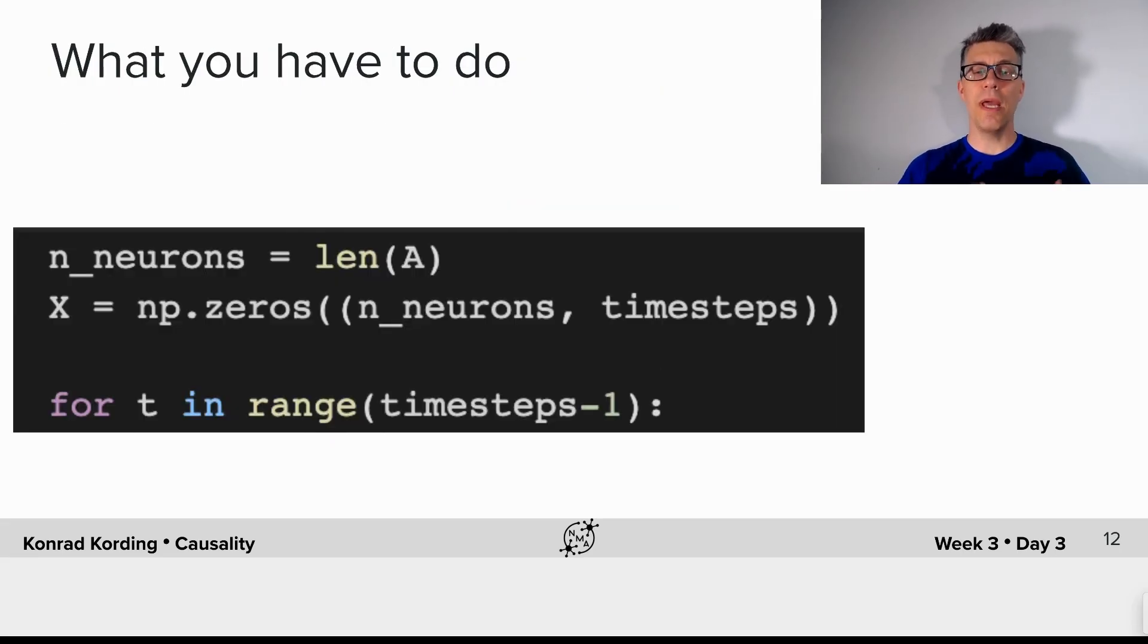So now it is time for you to implement the dynamical system. We give you how many neurons we have. We initialize them already for you. We know that we will have to loop for all the time points. And now it is time for you to implement the dynamics of this simple system.